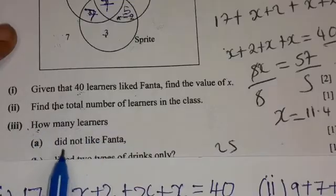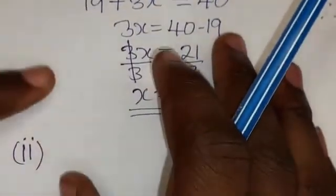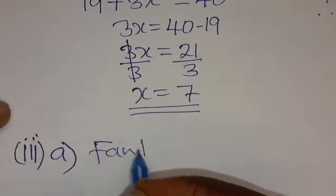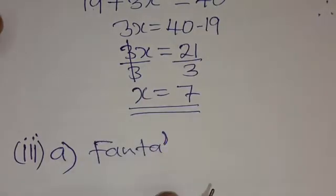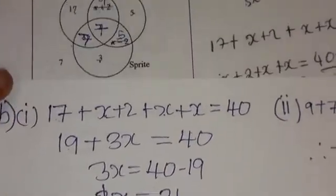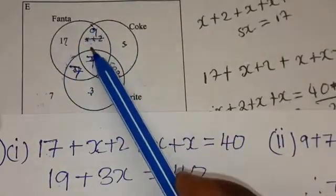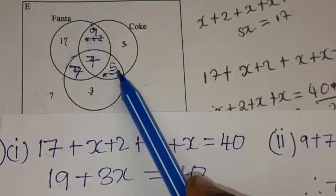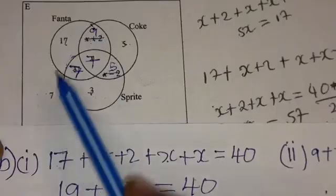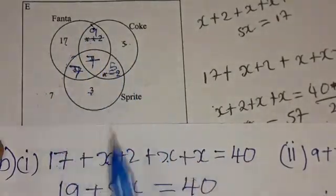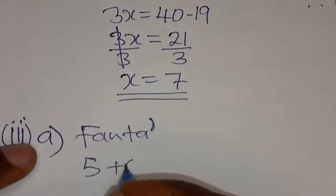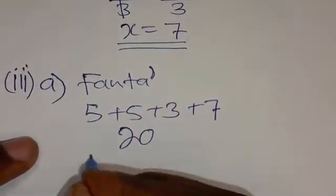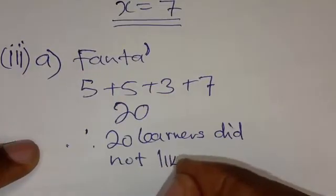Part 3A says: how many learners did not like Fanta? They want us to find Fanta complement — that is, all learners outside set Fanta. We exclude all students who liked Fanta and add only those outside set Fanta: 5 plus 5 plus 3 plus 7, which gives 20. Therefore, 20 learners did not like Fanta.